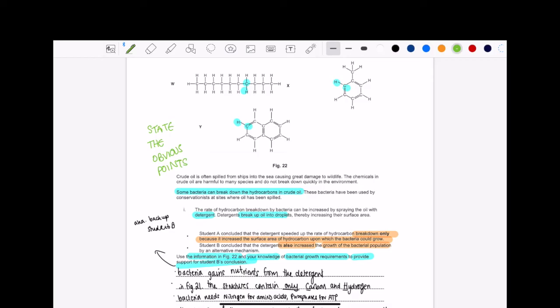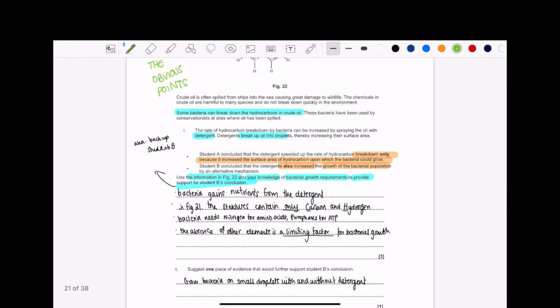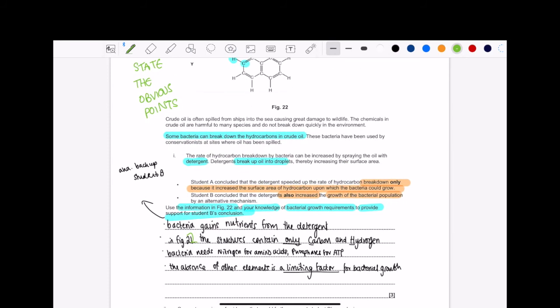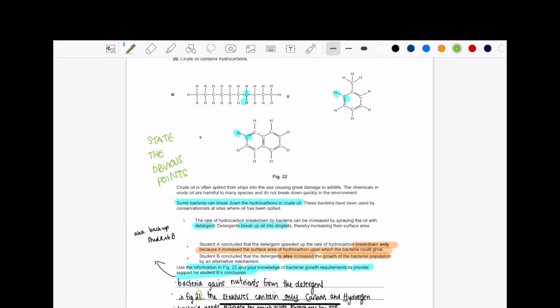So let's consider figure 22. As I said before, they are hydrocarbons. So that means they only have carbon hydrogen atoms only. And now my friends, please, for the love of God, state all the obvious points. Say it, say that the fact that in figure 22 the structures contain only carbon and hydrogen. They did say use the information in figure 22, and we are doing that. And that is one mark.